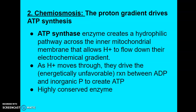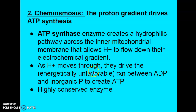This brings us into part two of oxidative phosphorylation: chemiosmosis. Chemiosmosis is where the hydrogen ion proton gradient drives ATP synthesis. In chemiosmosis, we have a very important enzyme called ATP synthase. ATP synthase creates a hydrophilic pathway across the inner mitochondrial membrane that allows hydrogen ions to flow down their electrochemical gradient. As those ions move down, they drive the reaction between ADP and an inorganic phosphate to create ATP.